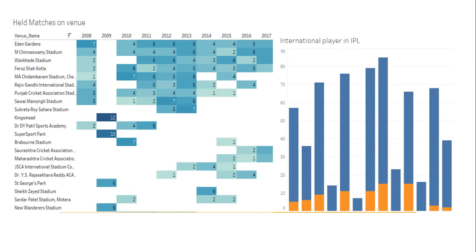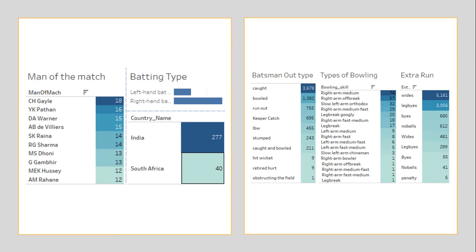Another factor is the venue where matches were held. We can see that in Eden Gardens, most of the matches were held. Also, there are players who are international — the orange color shown in the chart represents international players. As per the count, they are fewer than the Indian players. Next, the Man of the Match award most of the time goes to Chris Gayle.